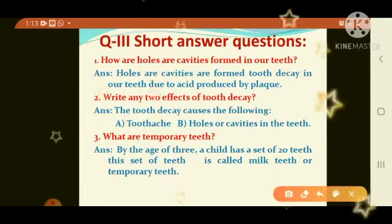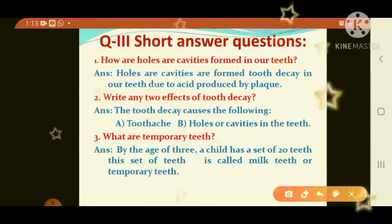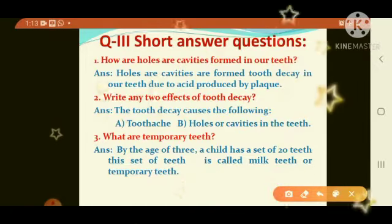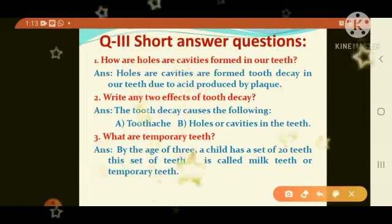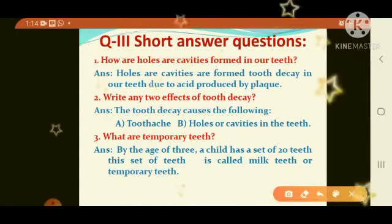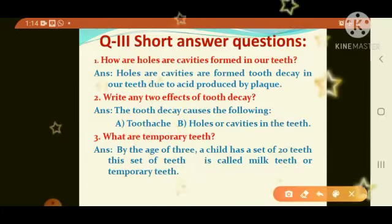Question number 3: short answer questions. First: how are holes or cavities formed in our teeth? Answer: holes or cavities are formed due to tooth decay caused by acid produced by plaque. Second: write any two effects of tooth decay. Answer: A) toothache, B) holes or cavities in the teeth. Third: what are temporary teeth? Answer: by the age of 3, a child has a set of 20 teeth, called milk teeth or temporary teeth.